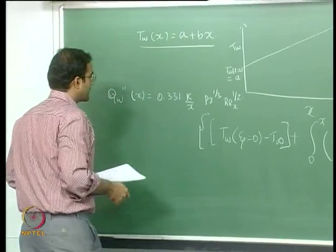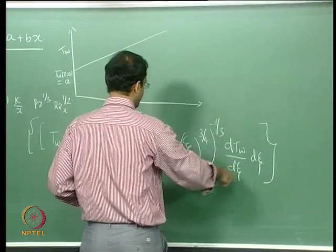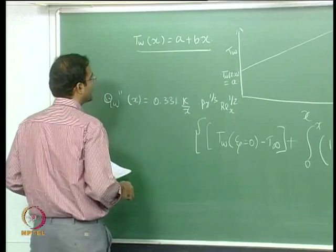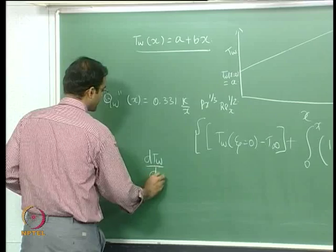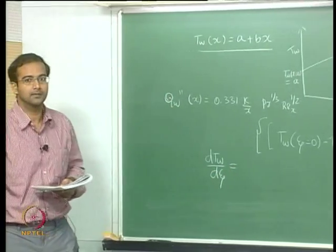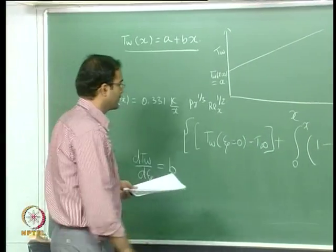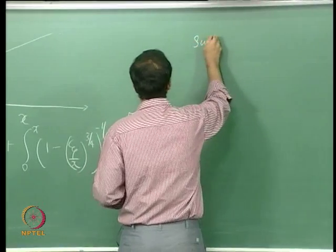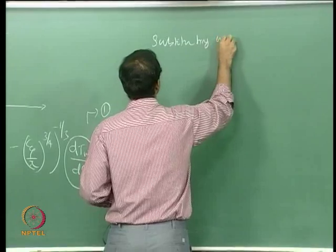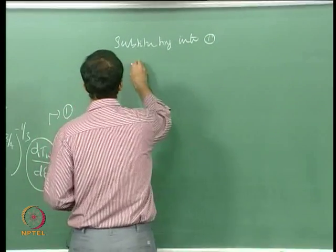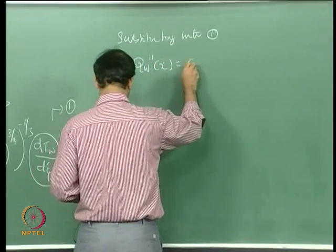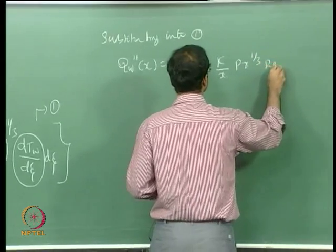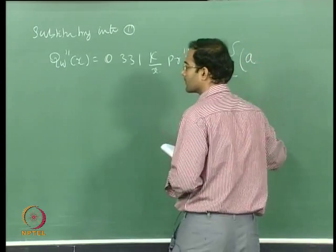To evaluate the Duhamel integral, we first need the slope of the wall temperature profile. Since this is a linear profile T_wall = a + bx, it is very simple: dT_wall/dζ = B. We substitute this into equation 1, and T_wall at ζ=0 is simply equal to a.